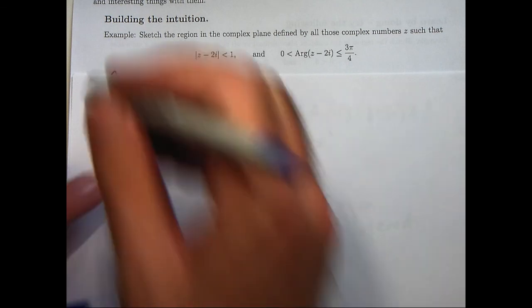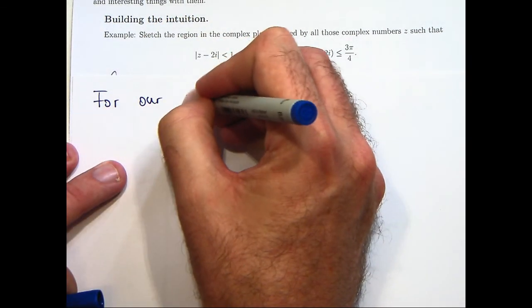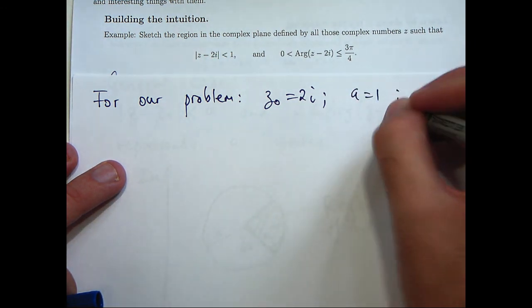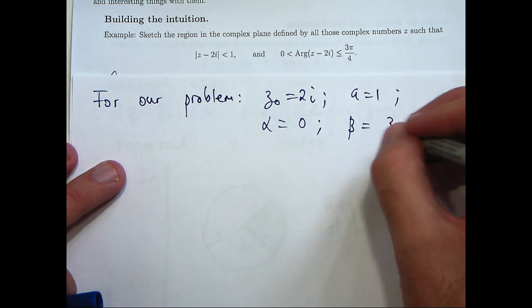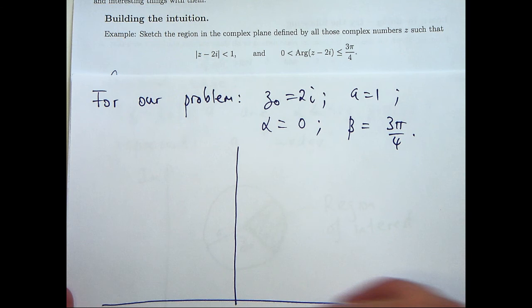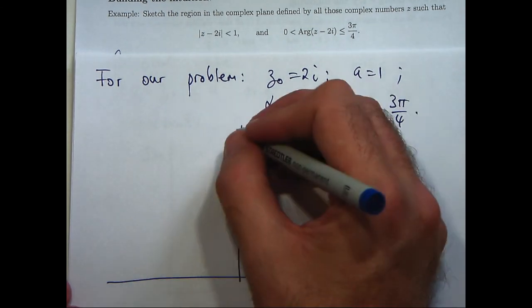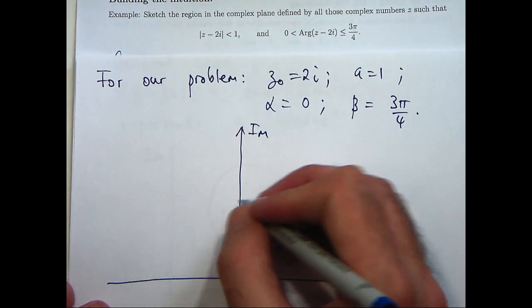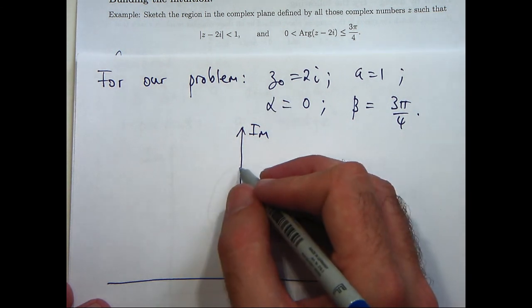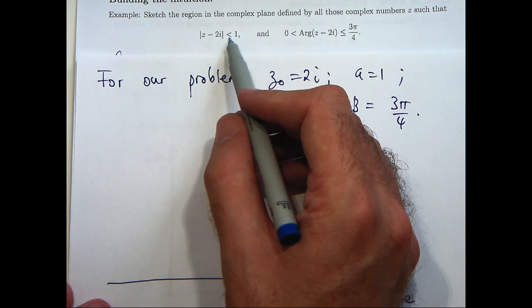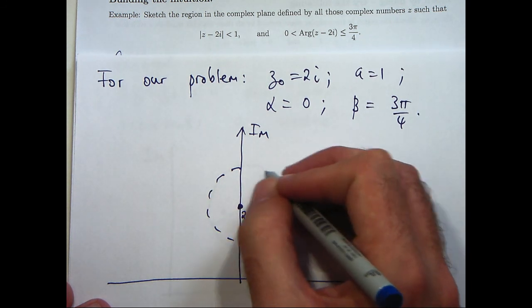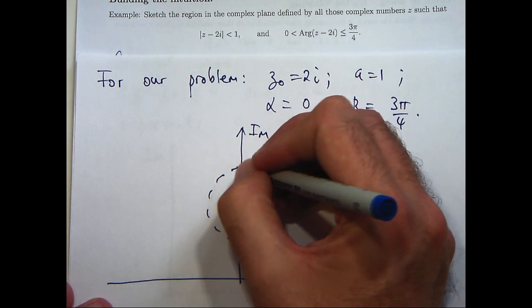So for our problem, z0 equals 2i, a equals 1, alpha equals 0, and beta equals 3pi on 4. So let's construct our wedge and put it all together. So let's go up to 2i and draw a circle around 2i with radius 1. So notice I'm not going to include the edge here, so I'm going to draw a dotted line.